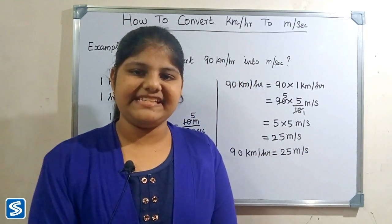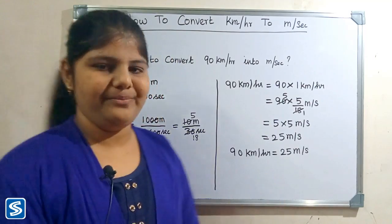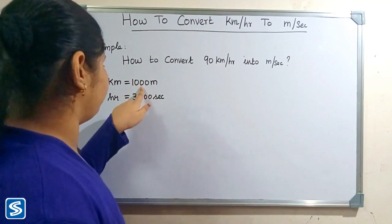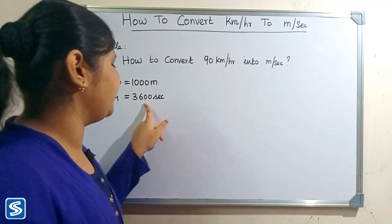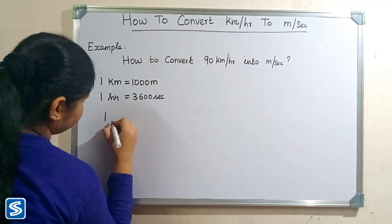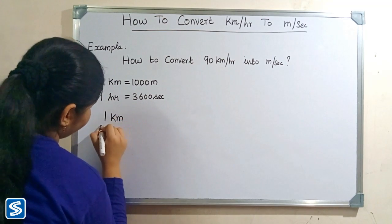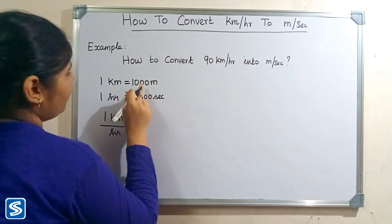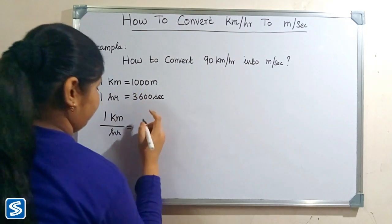Next we will see another way of solving this problem. We already know that 1 kilometer is equal to 1000 meters and 1 hour is equal to 3600 seconds, so 1 kilometer per hour is equal to 1000 meters by 3600 seconds.